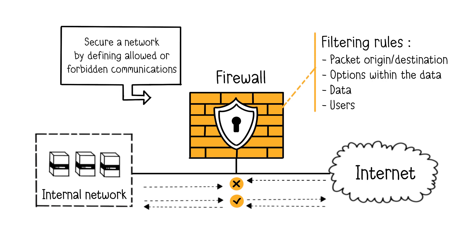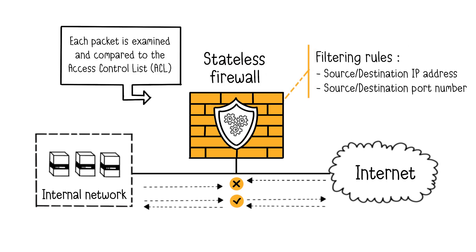There are different types of firewalls based on the nature of the analysis and processing they perform. The first type is the stateless firewall. Each packet is examined independently with no relation to the previous ones and compared to a list of filtering rules, known as access control lists. This type of firewall allows or denies packet passage based on source and destination IP address and source and destination port numbers. Any exchanges with unauthorized ports will be blocked.